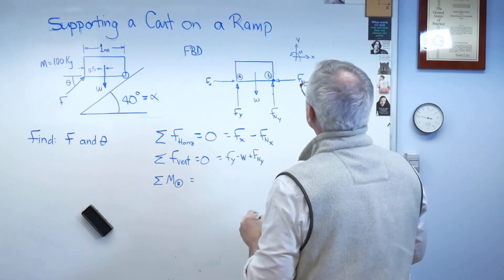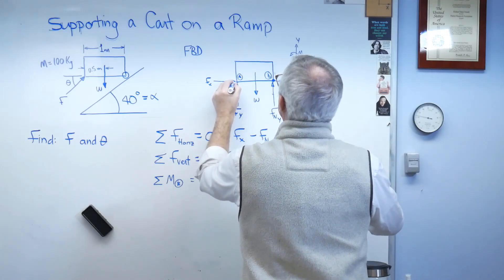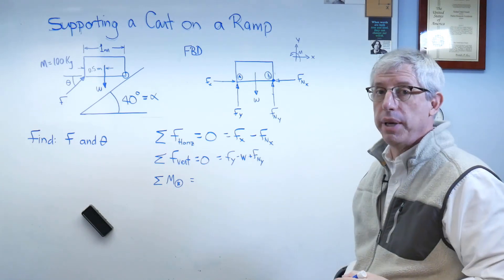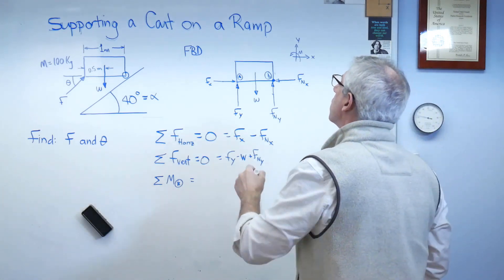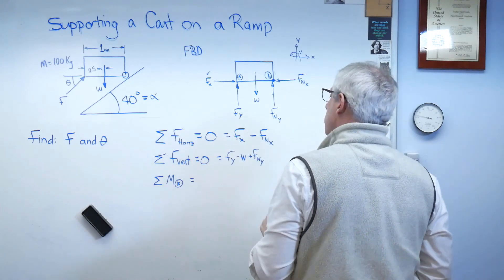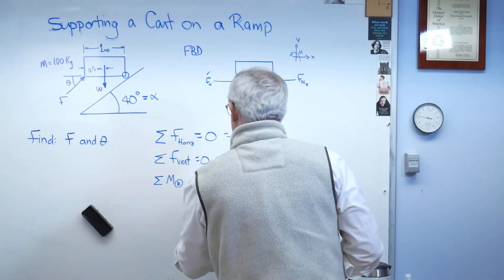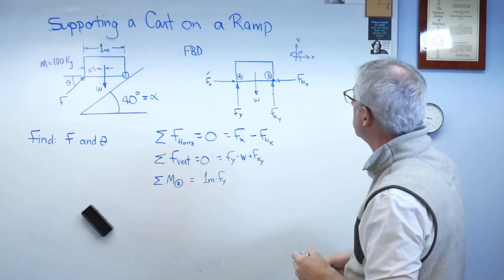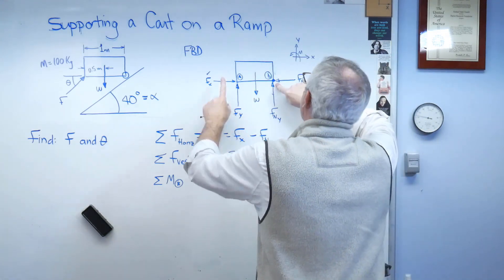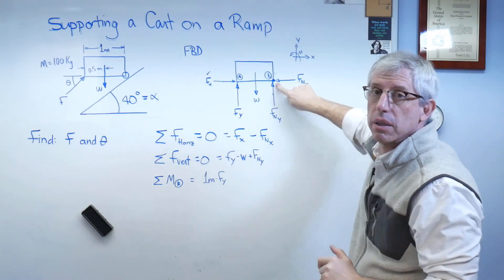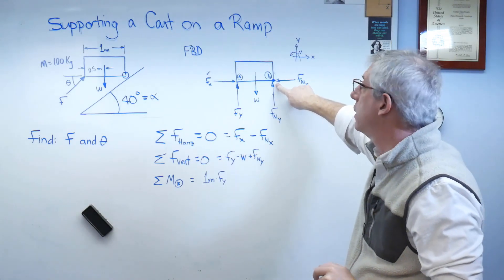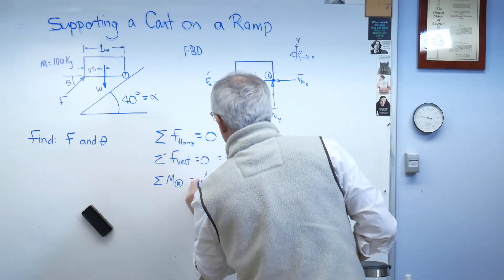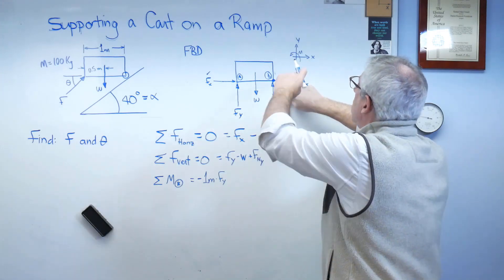All right, let's see. Let's just start going through the forces here and writing down the associated moments. F of x goes right through point B, so F of x does not create a moment. F_y does create a moment, so that's one meter times F_y. Now is it positive or negative? Well, about that point, F_y tries to rotate the box clockwise. Well, I've decided counterclockwise is positive, so this has to be negative.